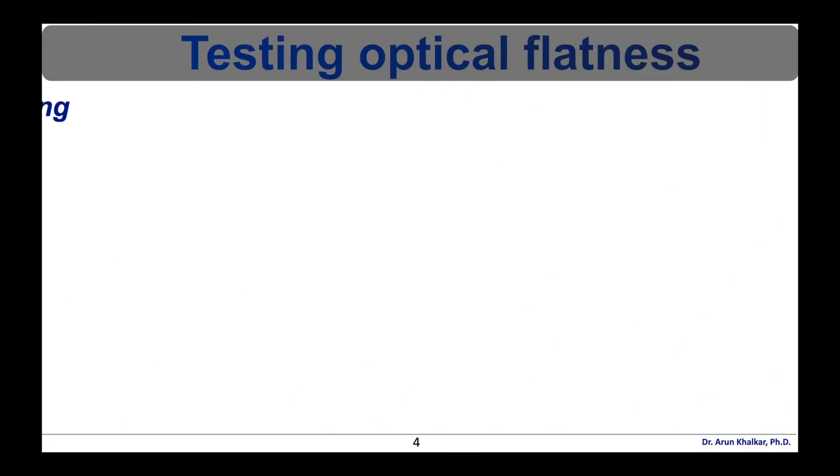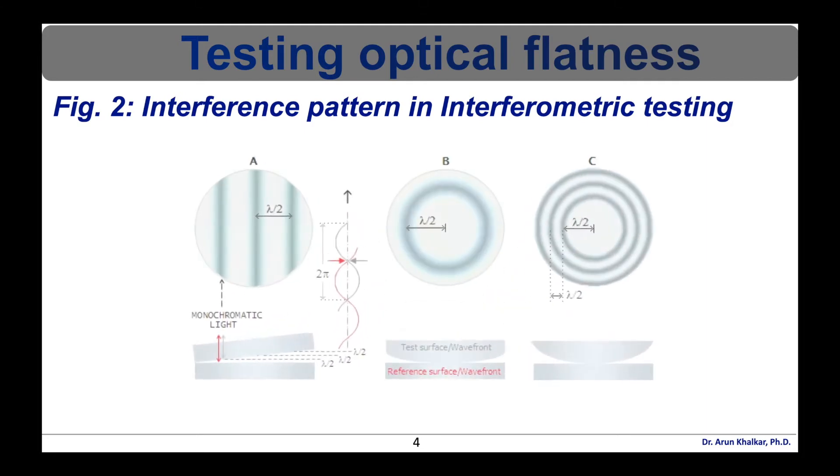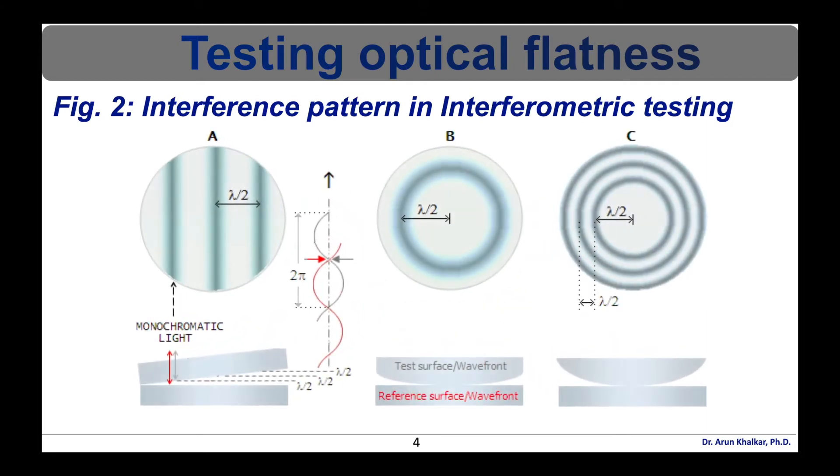Interferometric testing of optical surface quality makes clever use of interference of light which under specific conditions can produce visual patterns disclosing surface topography down to a fraction of wavelength. In general, the interferometer is an optical device combining two wave fronts. One is reference which is very perfect and the other produced by the test surface.